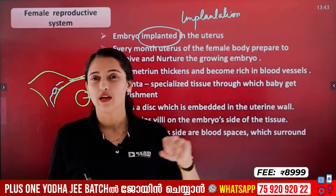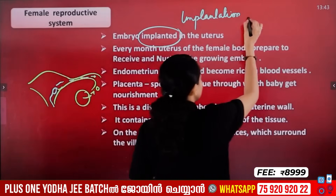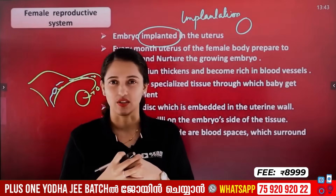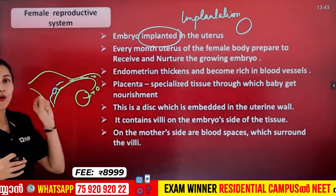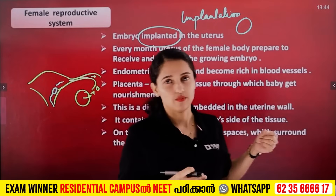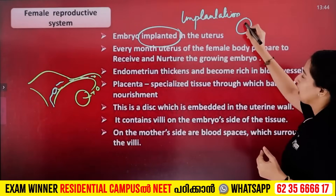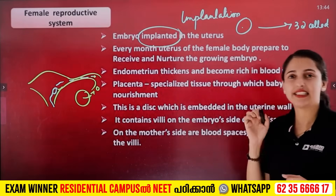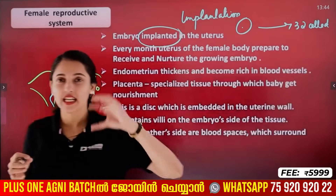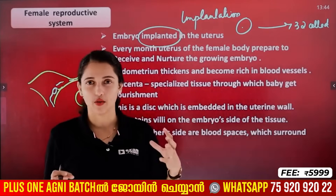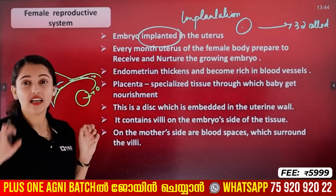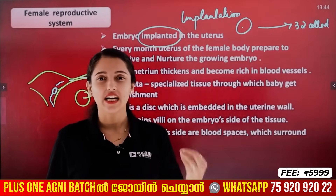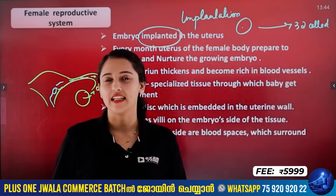So how does the zygote become an embryo? The zygote is a single cell. When it goes to the uterus, it undergoes mitotic division — a single cell becomes a 32-cell stage, which becomes an embryo. That embryo attaches to the inner wall, the endometrium, and that process is implantation, which means the woman is pregnant.